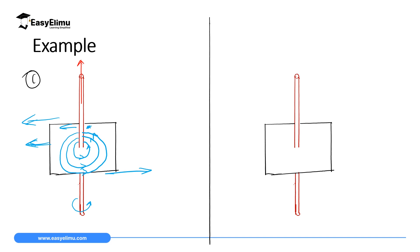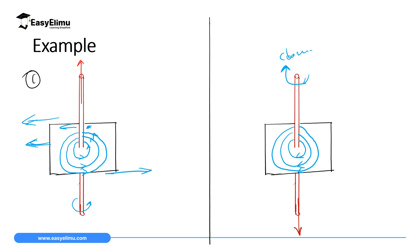In the second diagram, we want to change the direction of current — now current moves down. If current moves down, then you have your screw and you want to tighten it. Tightening, we rotate it in a clockwise direction. Therefore, in the front it will be moving like that, and at the back it will be moving like that — this is a clockwise direction. If you tighten this in a clockwise direction, it will be moving down the same way current is moving. In front, it will be moving from the right side of the screen to the left side of the screen, and at the back it will be moving from the left side to the right side.